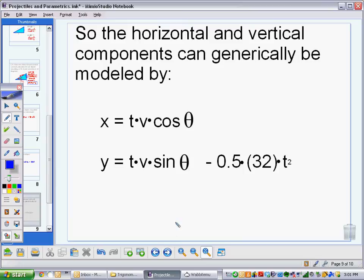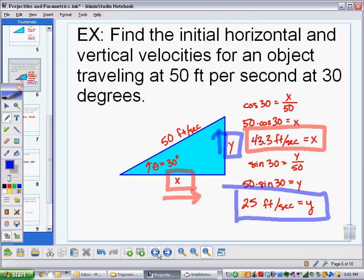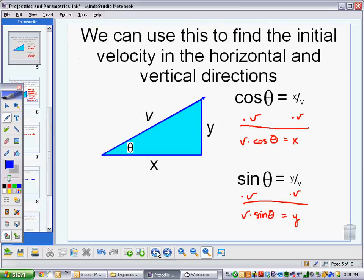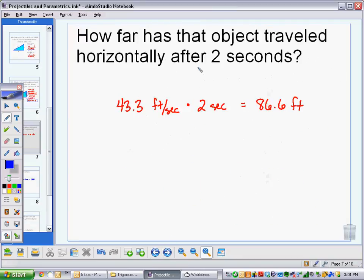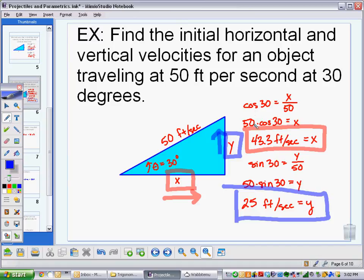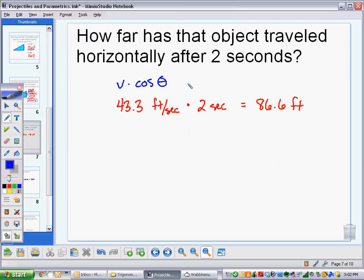So the horizontal and vertical components can generically be modeled by these equations. It was this part was what we got all the way back here. But then to answer this question about how far it had gone, we took that horizontal component, the V times the cosine of theta. V times the cosine of theta and multiplied it by the time.